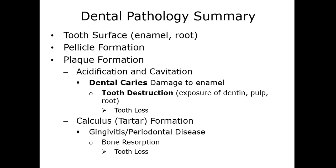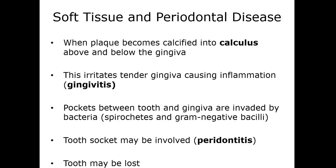Cariogenic bacteria ferment polysaccharides stored in granules. When plaque becomes calcified into calculus above and below the gingiva, it irritates the gum tissue and causes gingivitis — an inflammation of the gums. This opens up pockets between the tooth and the gum line that are then invaded by bacteria, including Streptococcus mutans, one of the most common. The tooth socket may become inflamed — known as periodontitis — which weakens the structures holding the tooth in the socket, causing tooth loss.